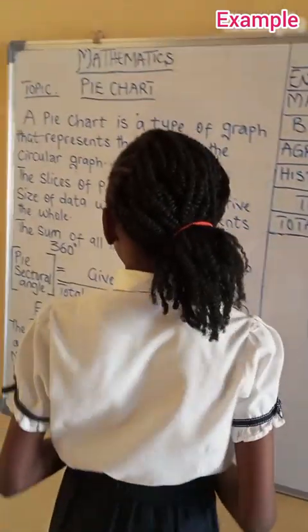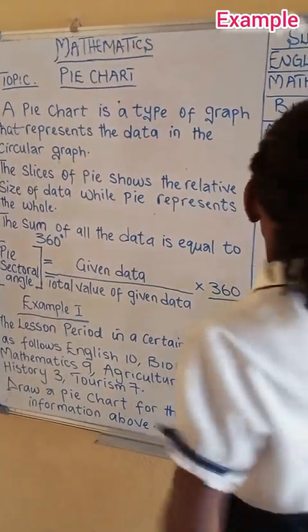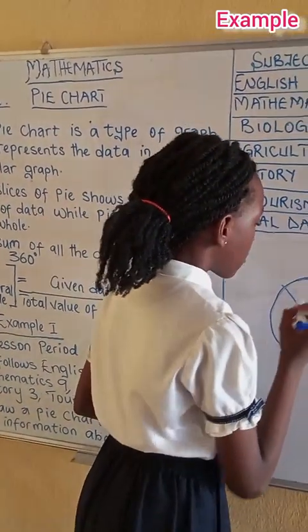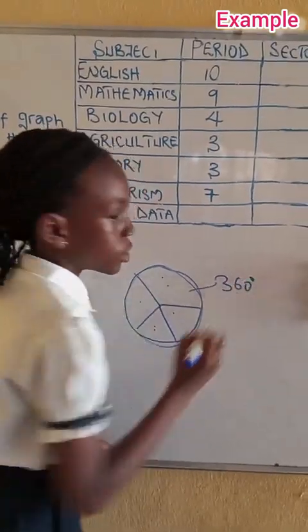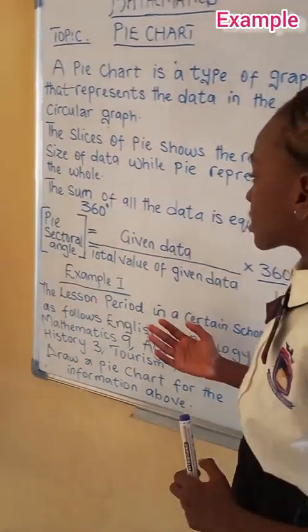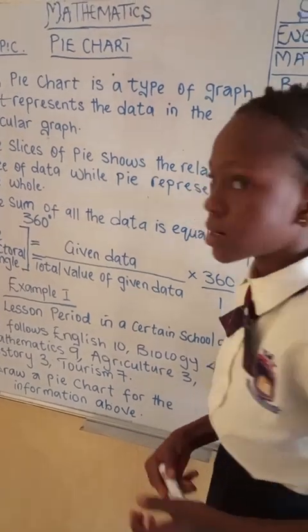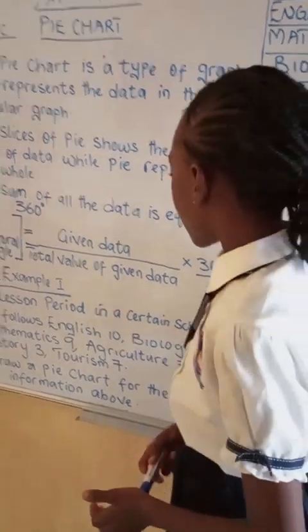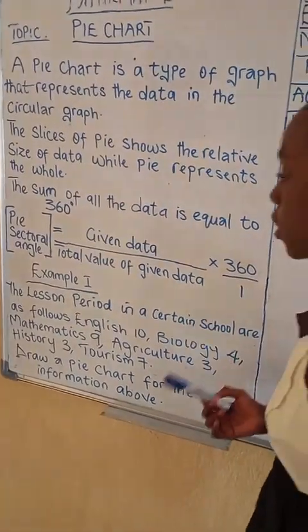The sum of all the data is equal to 360 degrees, meaning that the sum of all this data is equal to 360 degrees. The sectoral angle equals to given data divided by the total value of given data times 360 over 1.